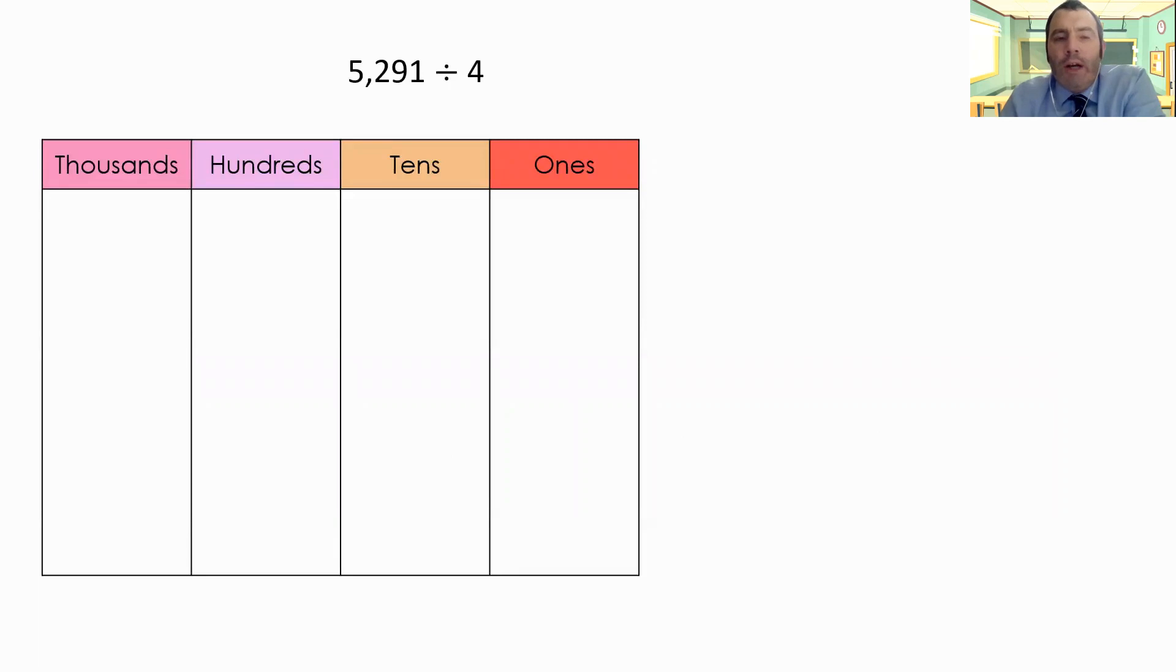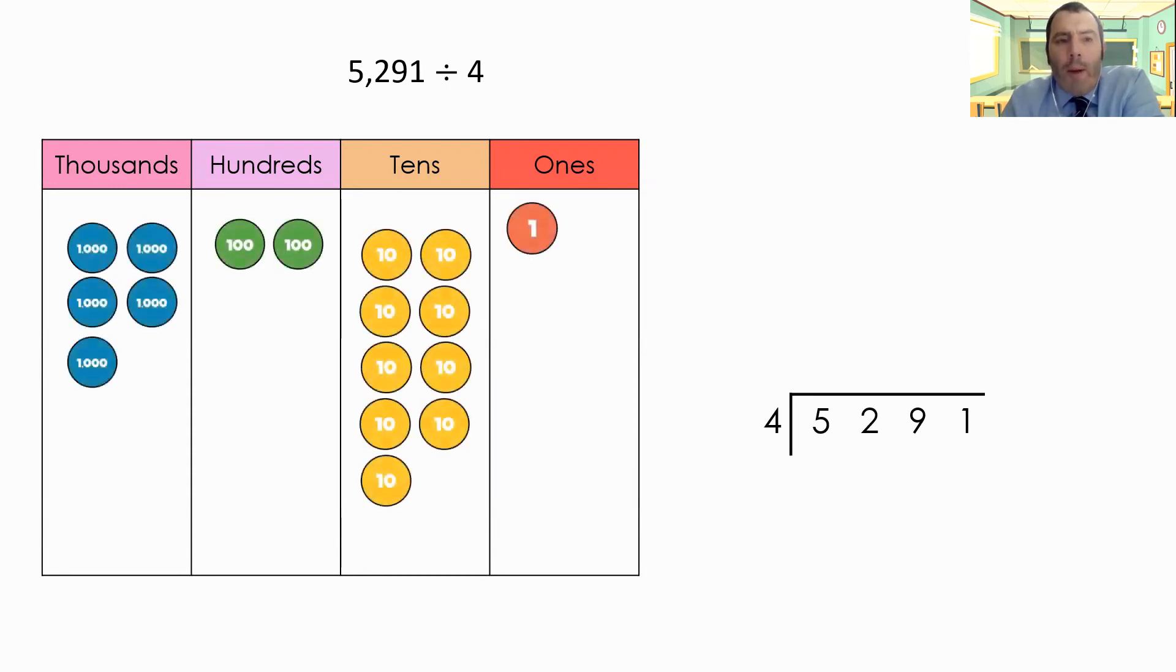Okay, we're going to have a look at this one. 5,291 divided by four. We're going to use the written method alongside it. So we need to put our counters in our columns to help us. There we go. 5 thousands, 2 hundreds, 9 tens, and 1 one. We're going to divide this by four. So what we're going to do, we're going to box up lots of four in each column, and we're going to record them as we go through using the written method.